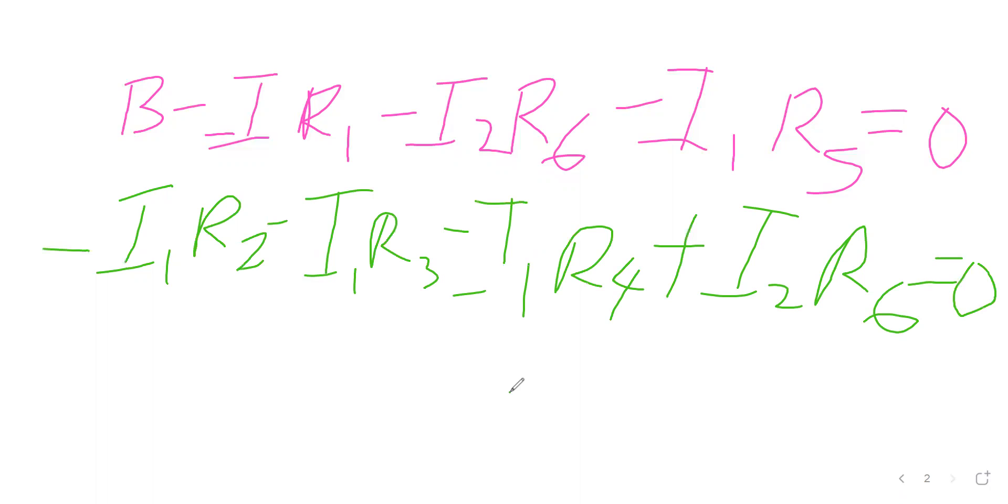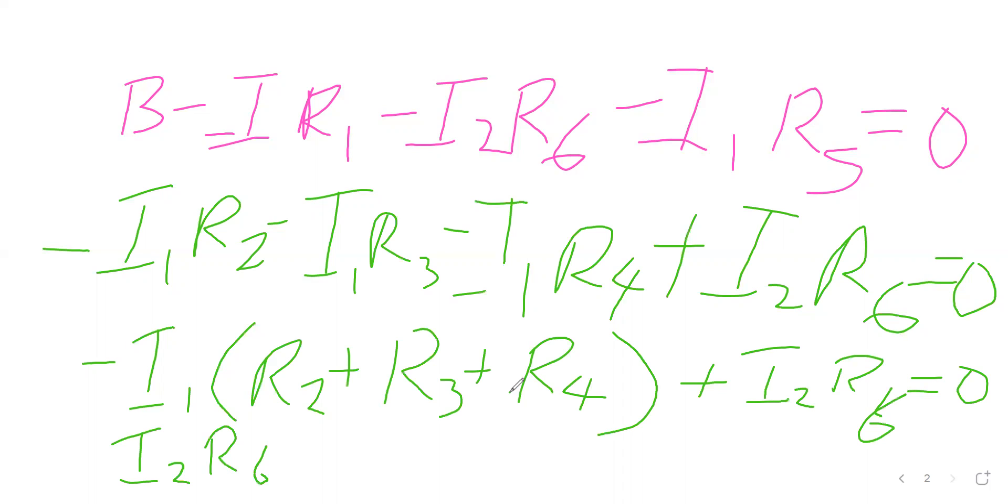If you look at this, we can say that minus I1 into brackets R2 plus R3 plus R4, closing the brackets, plus I2 R6 equal to zero. Then easily we can say that I2 R6 is equal to I1 open brackets R2 plus R3 plus R4.